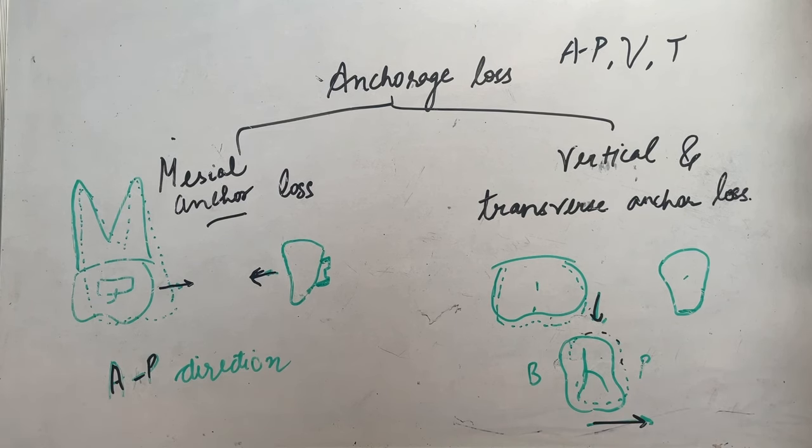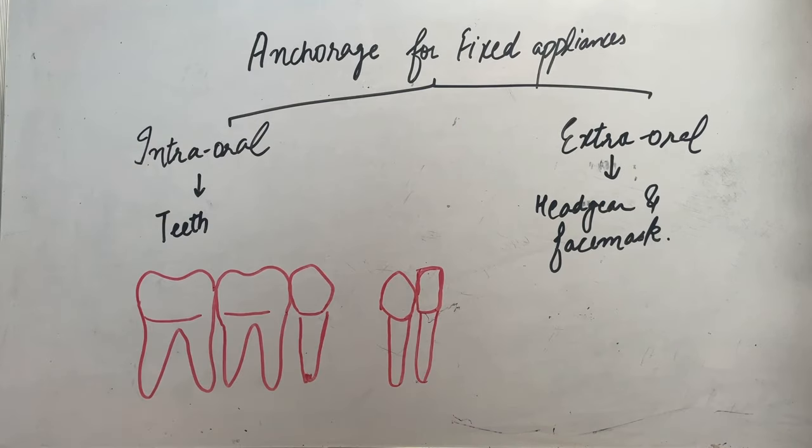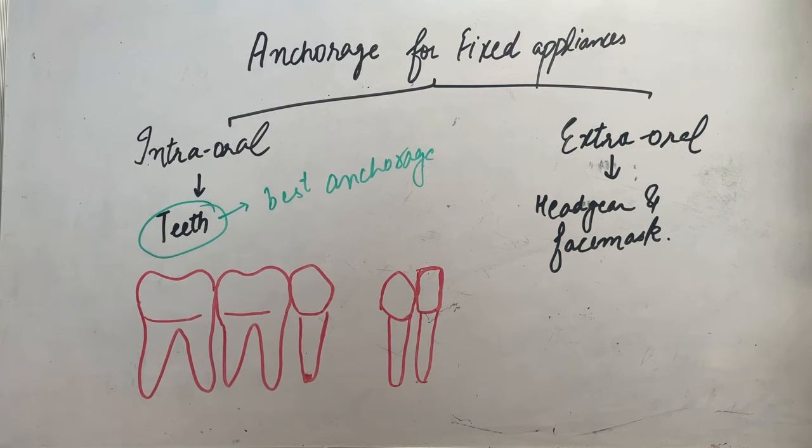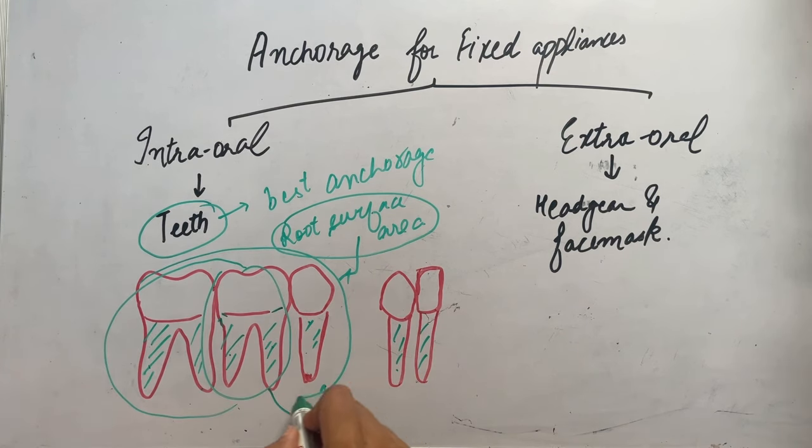Anchorage for fixed appliances could be intraoral or extraoral. In intraoral, the anchor is teeth. Here we'll discuss about the root surface area. More the root surface area, more will be the anchorage provided by involving more teeth. By involving more number of teeth, we'll get more anchorage. Hence these will be our anchor teeth.